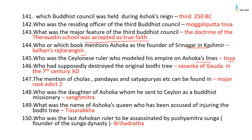Shashanka of Gauda in the 7th century AD had supposedly destroyed the original Bodhi tree. The mention of Cholas, Pandyas, Satyapuryas, etc., can be found in Major Rock Edict 2. Ashoka's daughter Sanghamitra, along with her brother Mahendra, was sent to Sri Lanka as a Buddhist missionary. Ashoka's queen accused of injuring the Bodhi tree was Tisyaraksha.